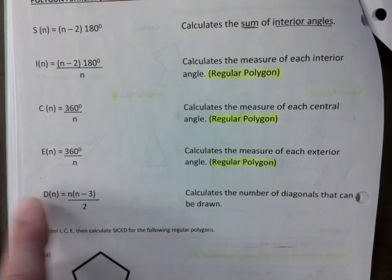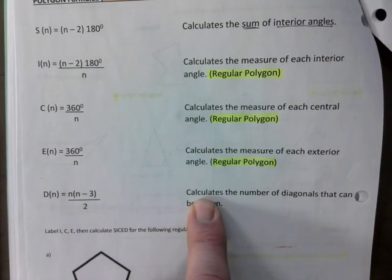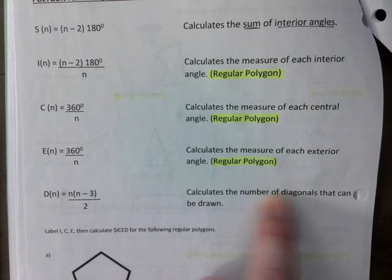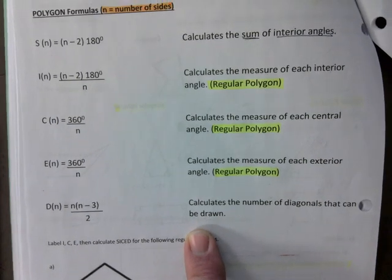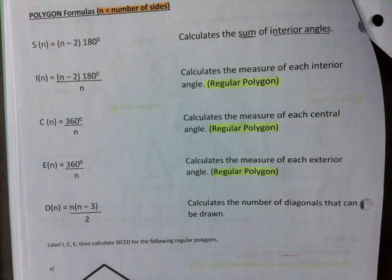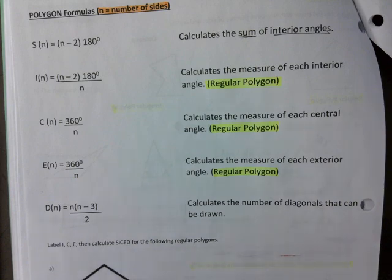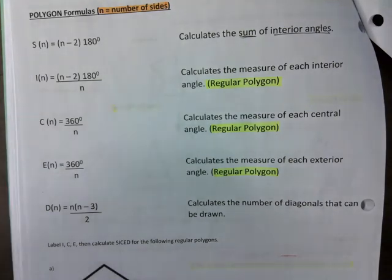And then D, the last one here, it calculates the number of diagonals that can be drawn. And I'm going to tell you something. If you just know how to use these formulas, sometimes you can just earn an easy mark. You just plug in solve. Boom. You've got the answer. Quite often.